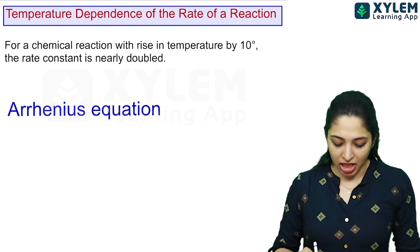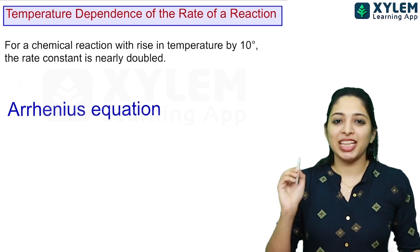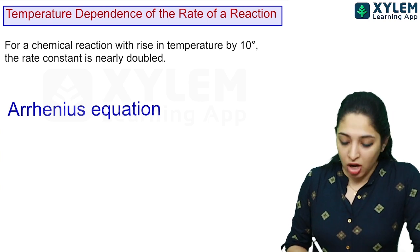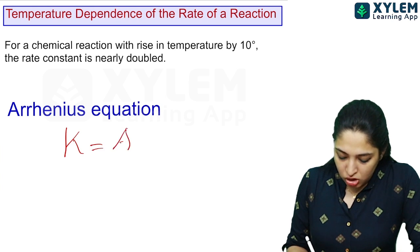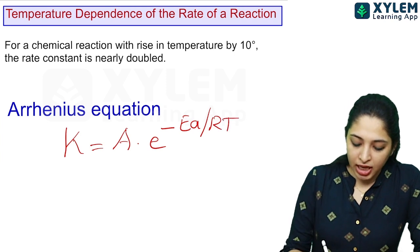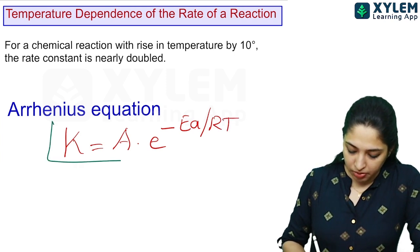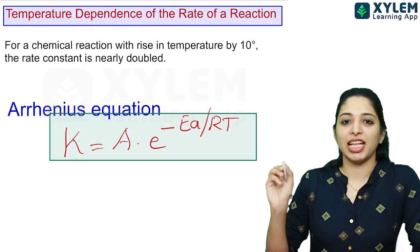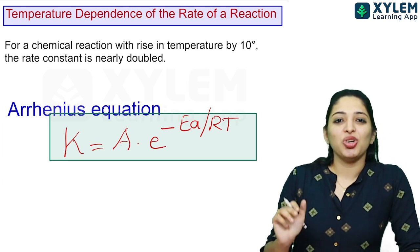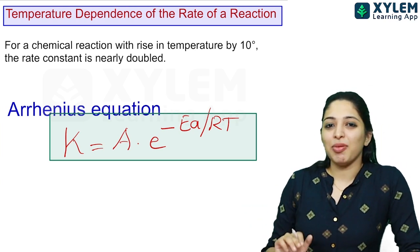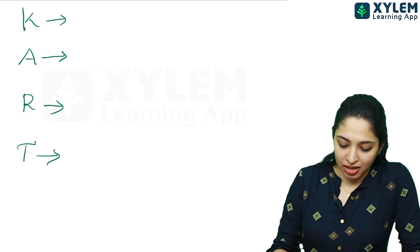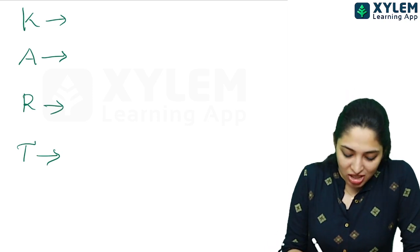The reaction rate is given by the Arrhenius Equation. k equals A into e raised to minus Ea by RT. k means rate constant.